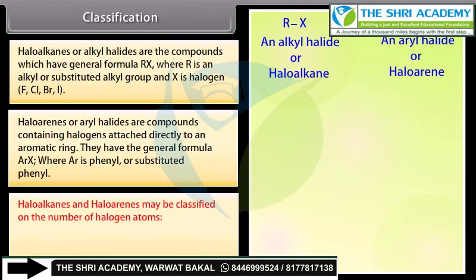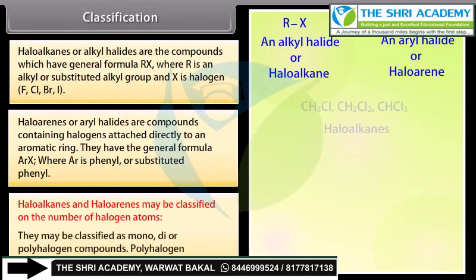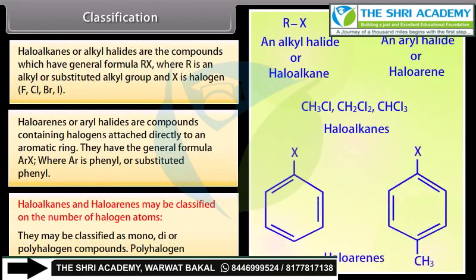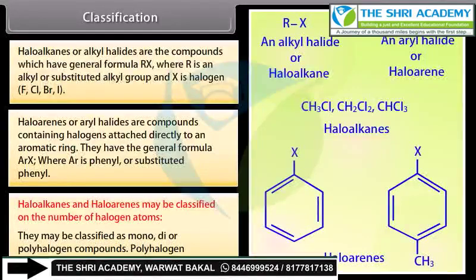Haloalkanes and haloarenes may be classified on the basis of the number of halogen atoms. They may be classified as mono, di, or polyhalogen compounds. Polyhalogen compounds include tri, tetra, and so on.